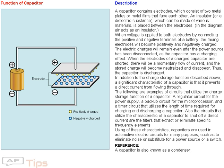Also the circuits that utilize the characteristic of a capacitor to shut off a direct current are the filters that extract or eliminate specific frequency elements. Using these characteristics, capacitors are used in automotive electric circuits for many purposes, such as to eliminate noise or substitute for a power source or a switch. A capacitor is also known as a condenser.